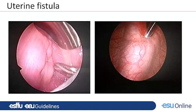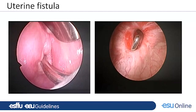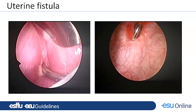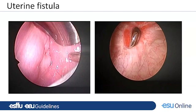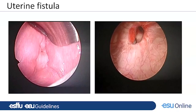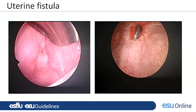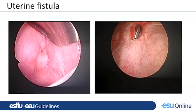In some cases you may encounter a vesicouterine fistula — you can see the cervix on one side, and a cystoscopy bougie going from the cervix to the fundus of the uterus. The best option in this case is to make a transvesical repair. If you approach transvaginally, you have to completely separate the cervix and use an approach typical for transvaginal hysterectomy, or perform a hysterectomy. But when the patient is young, it is much safer to make a transvesical approach.